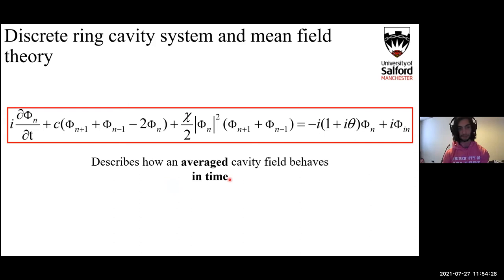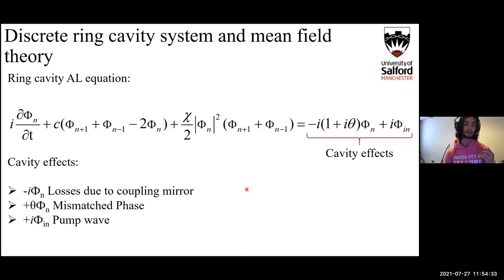These cavity effects can be described as follows: if you expand out that small bracket there, you've got the first term will be due to radiative losses due to the wave traversing the coupling mirror. The second one will be due to the mismatch of phase of the newly inputted wave with the wave that's already in the cavity. And the last term is just the linear contribution to the pump wave, which is constantly being added to the system.